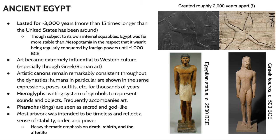Ancient Egypt as we know it — this kind of monolithic civilization — lasted for about 3,000 years. It's difficult to describe how much time that is. One way to put it: this is 15 times longer than the United States has been around as a country. And what's remarkable is that throughout these 3,000 years, Egypt was relatively stable.